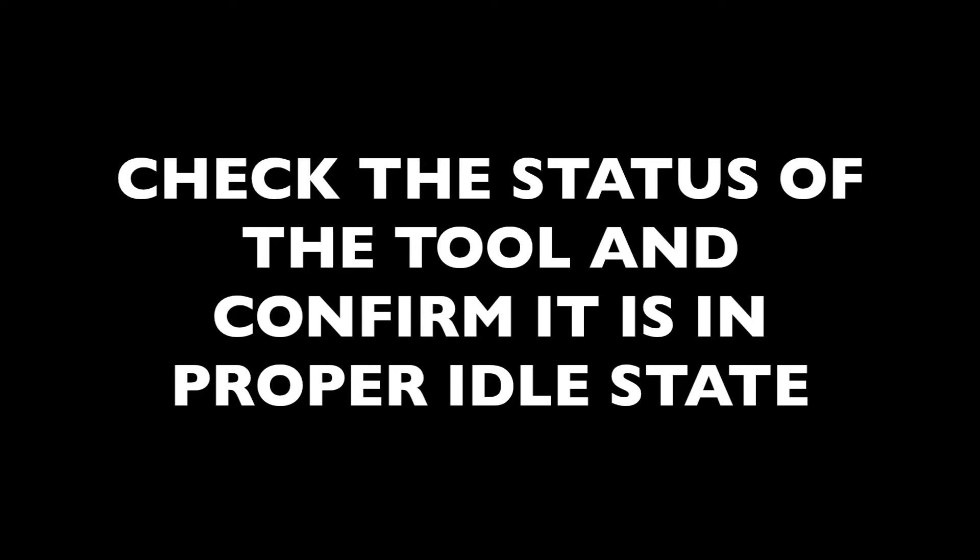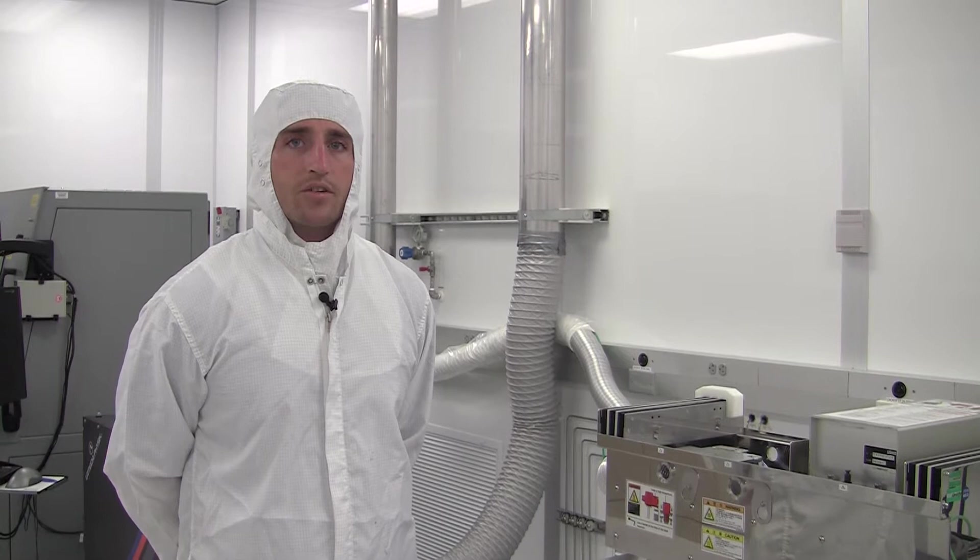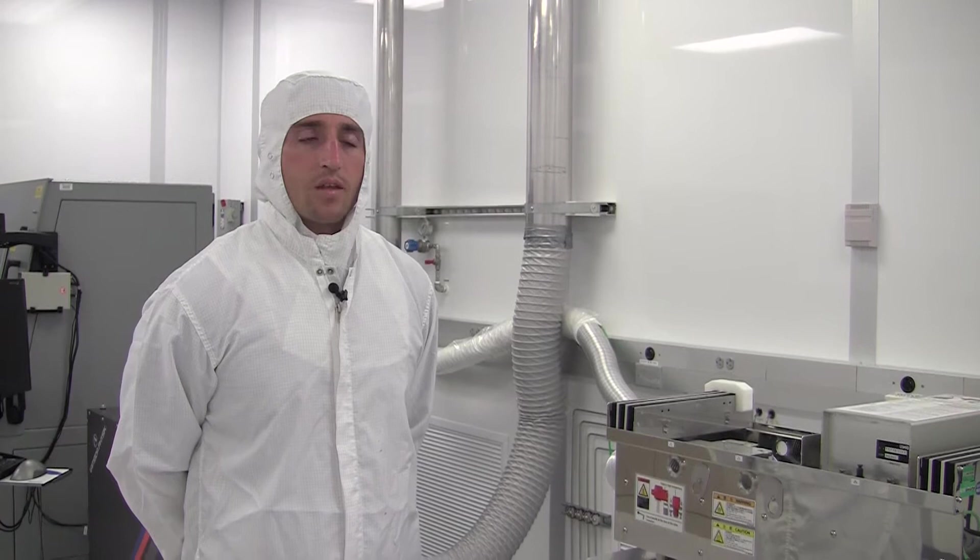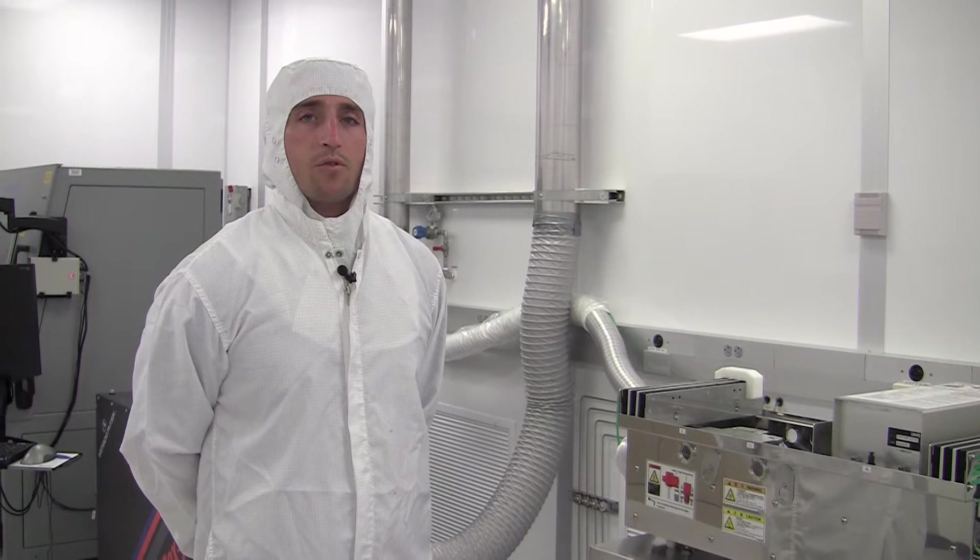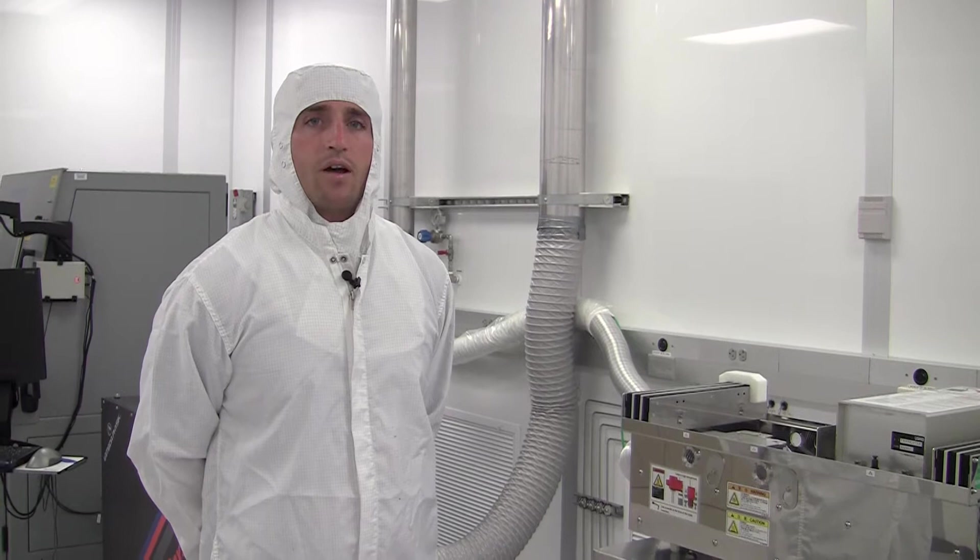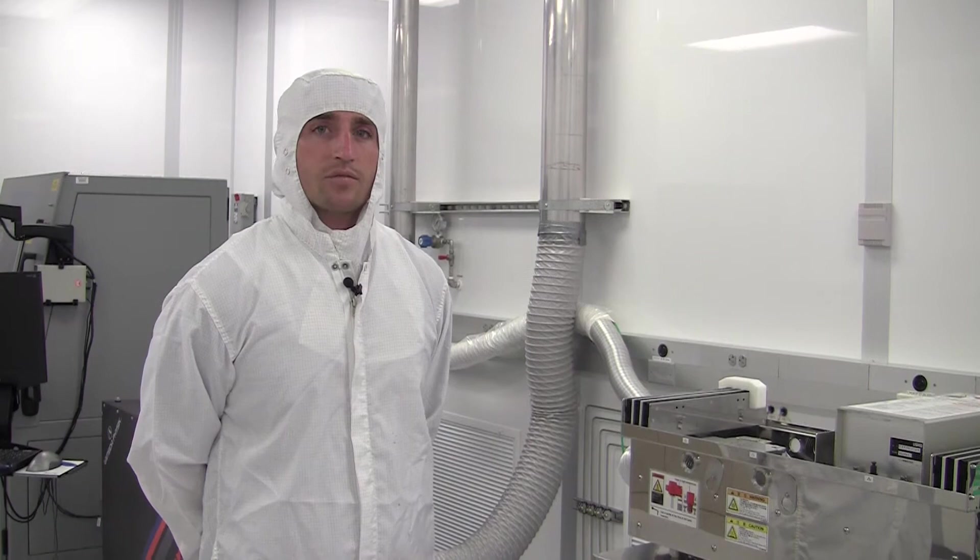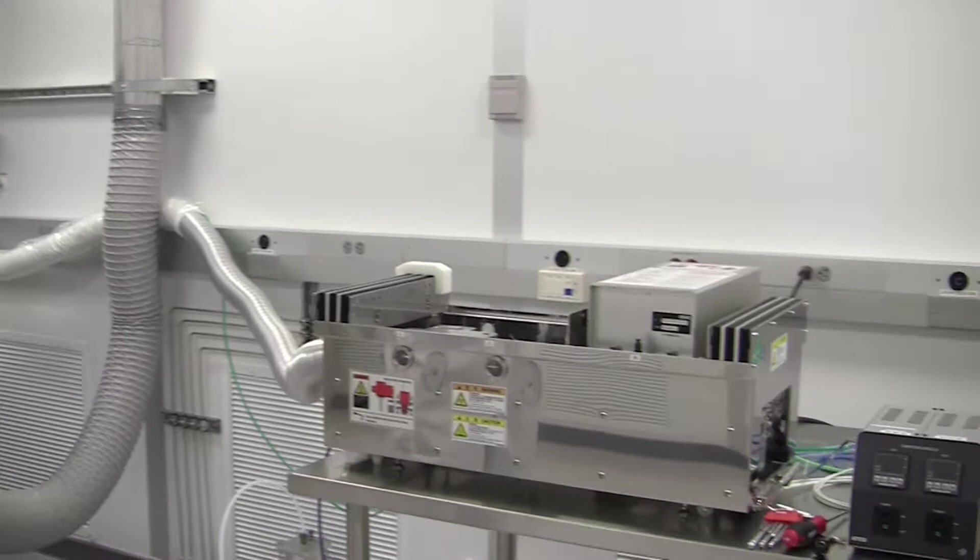Now we will start going through the standard operating procedures and tell you what to do once you are ready to start using the tool. Like most pieces of equipment in the shared facility what you will want to do is check the status of the tool and verify that it is in proper idle state. But even before that and as part of that you might want to go to the forge system and make sure you have a reservation for the equipment as well as have started your session in forge. But assuming that is done and you come to the tool you should first do a bit of a visual check to ensure everything is in proper idle state.